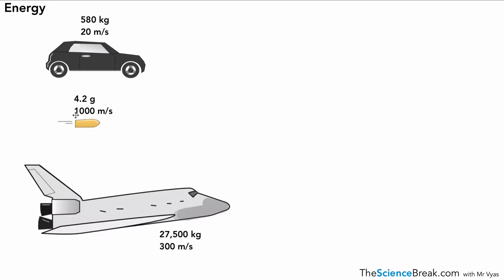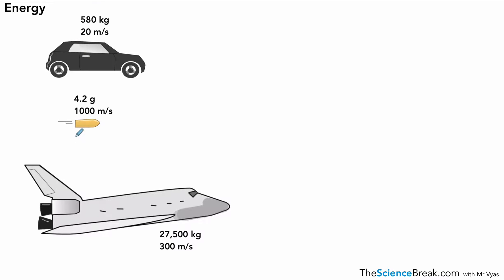It might be worth you having a go at some of these yourself. So here we've got a car, that's supposed to be a bullet, and at the bottom there we've got a space shuttle. Okay, so pause here, have a go at these three, and see what numbers you come up with, and we'll go through the answers in a moment.